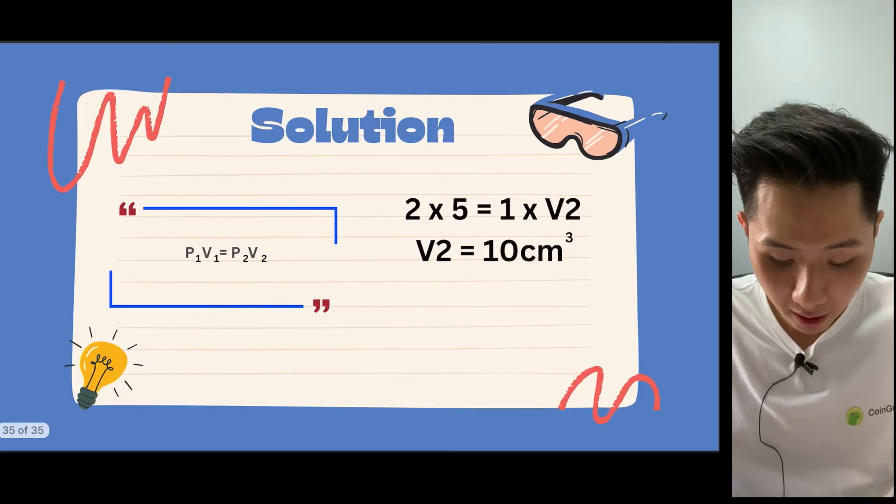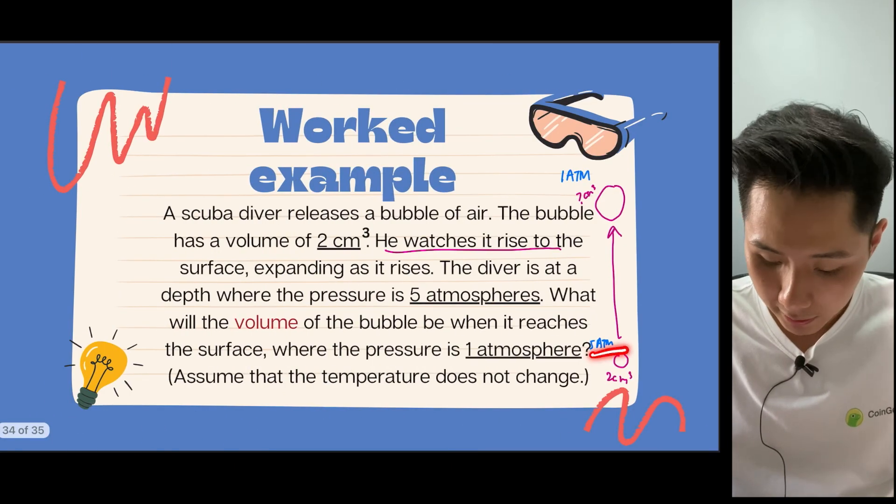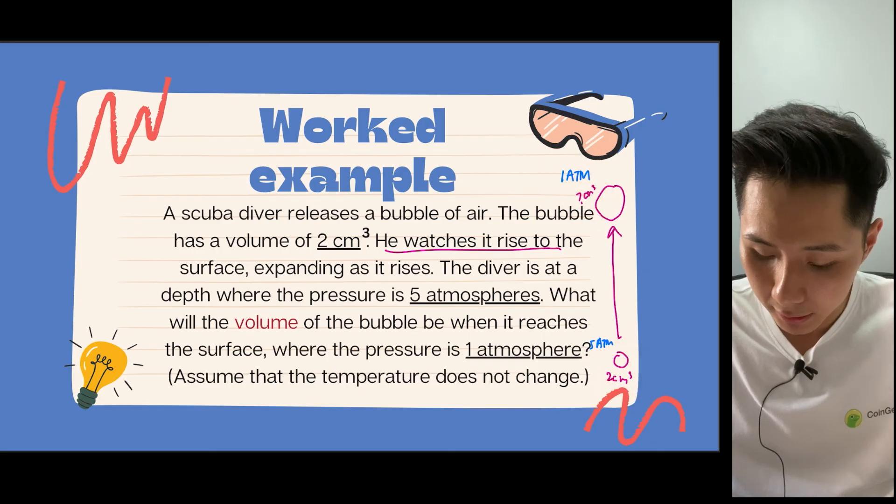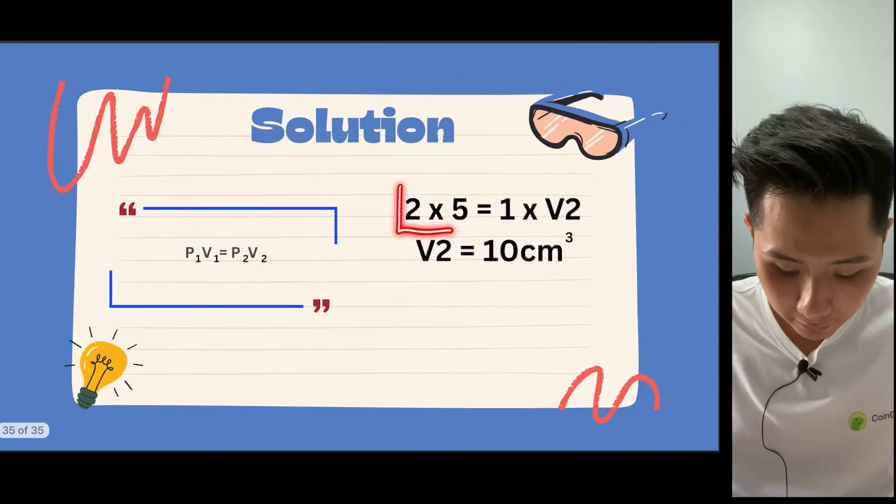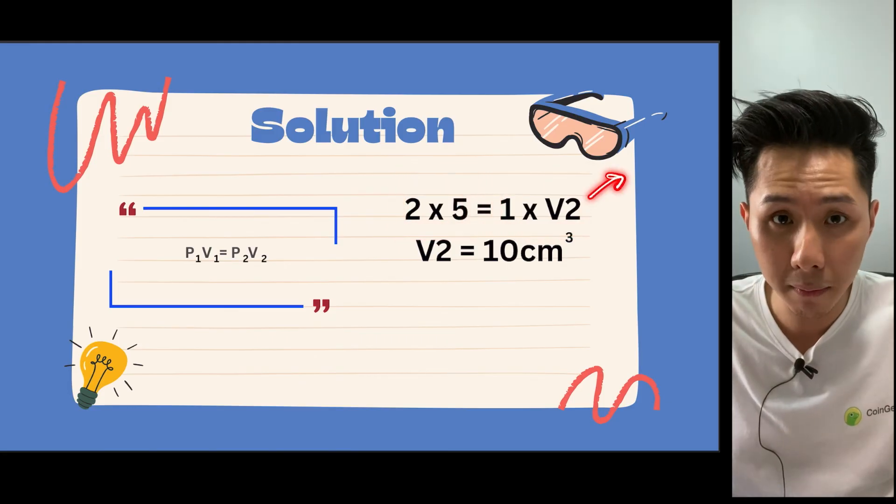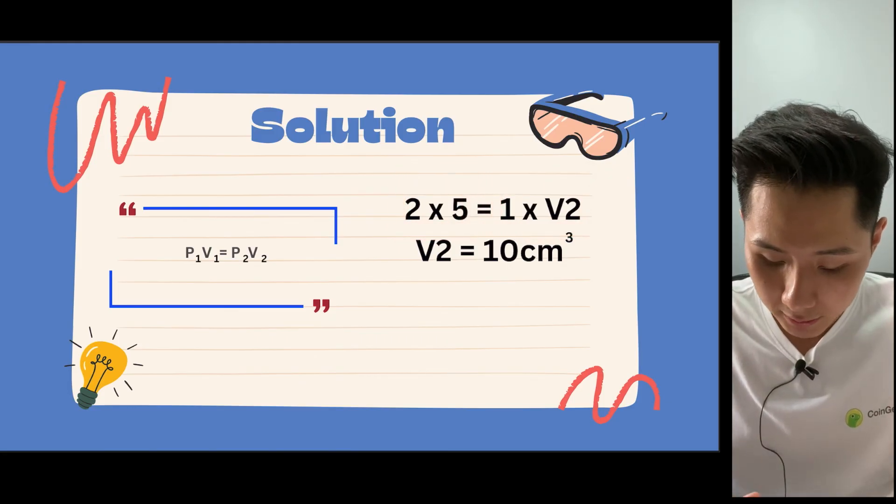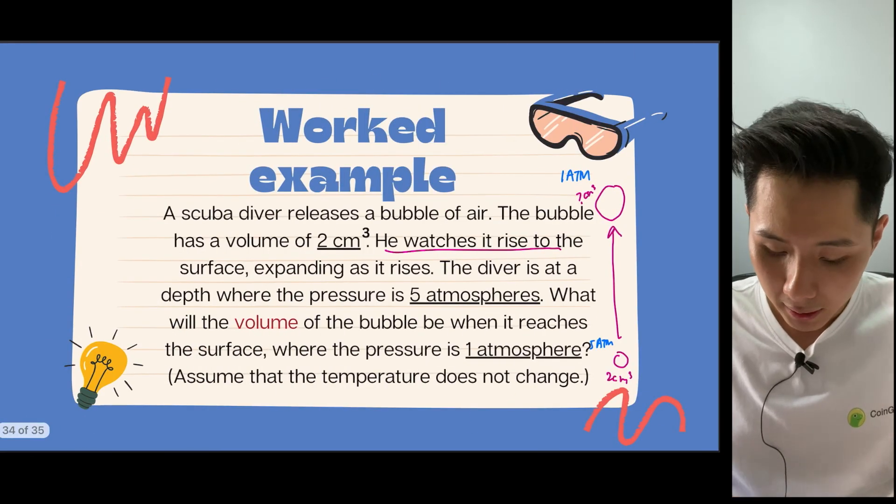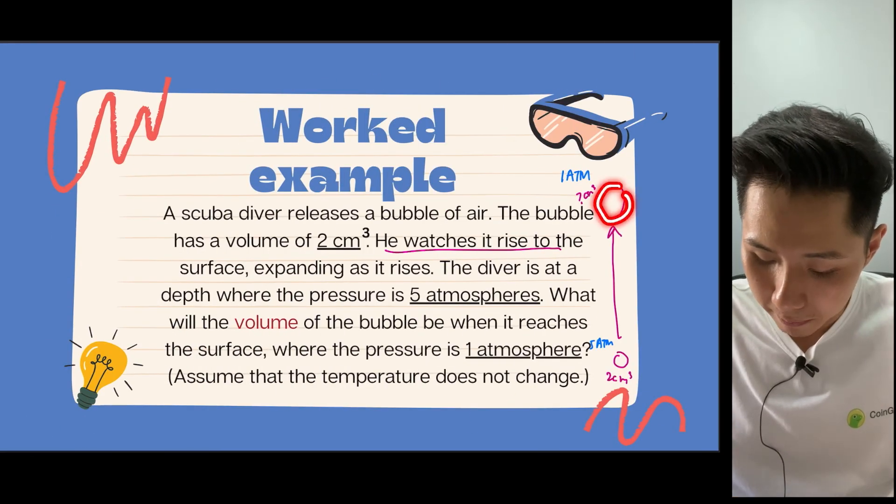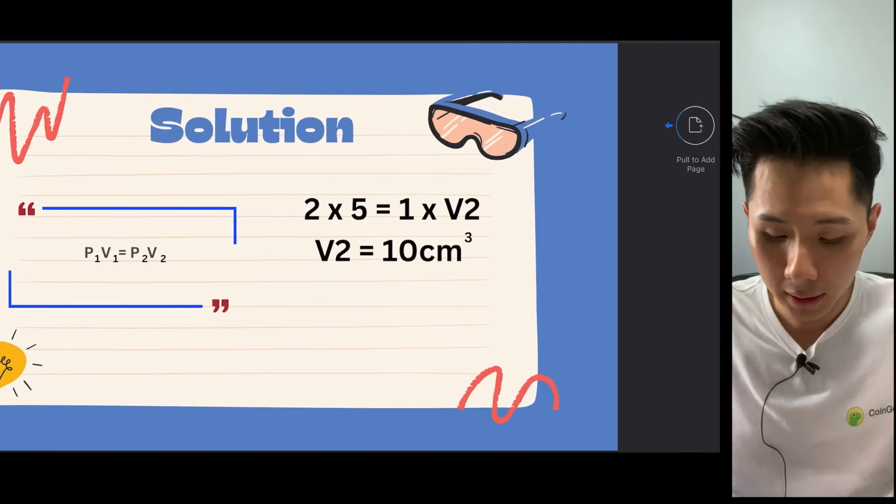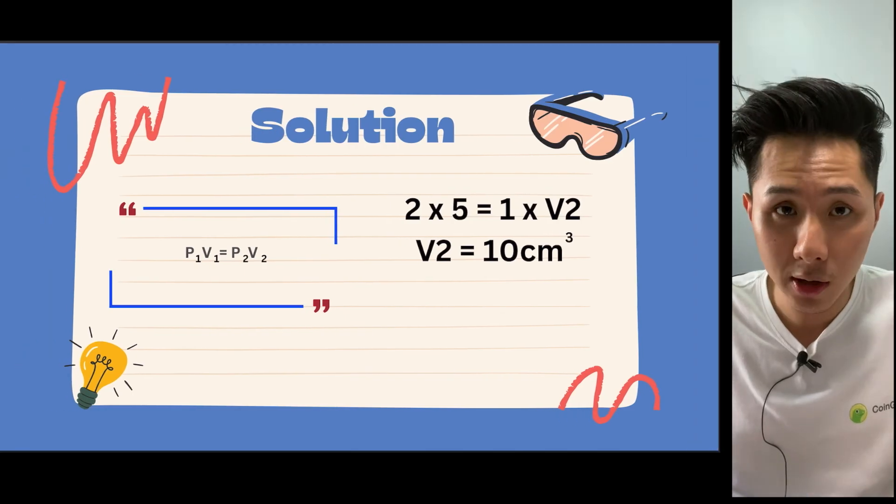So what we need to find out is how big will this bubble be when it is at the top? So if we look at the answer, you can simply use the first pressure multiplied by the volume and let it be equal to the pressure here multiplied by the unknown volume. So we can use 2 times 5 equal to 1 times the volume of the second bubble, and you will have found that volume 2 will be equal to 10 cm³, meaning it's a lot bigger as compared to when the bubble is still at the bottom of the pool. And that's about it for this chapter.